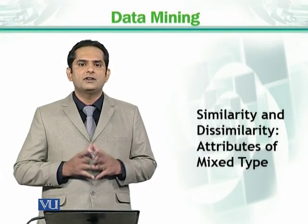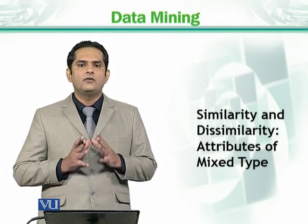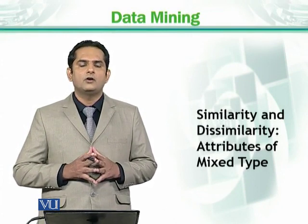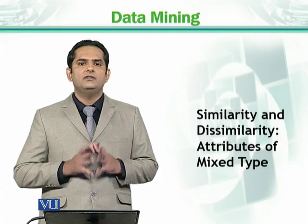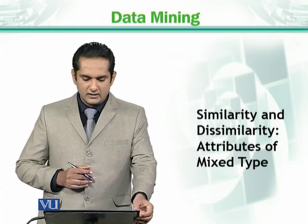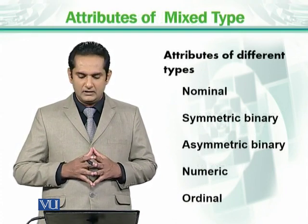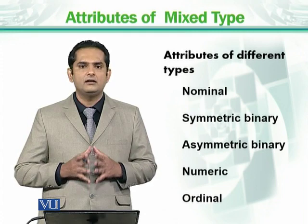We are trying to find out distance between different data objects. Whenever we are talking about finding the distance between data objects, we have to deal with the types of those data objects. Now these data objects are different types. Some are written here such as nominal, symmetric, asymmetric, numeric, ordinal.